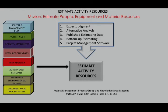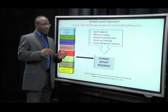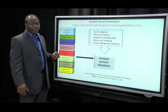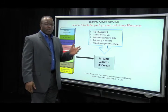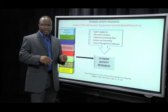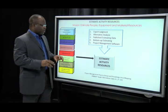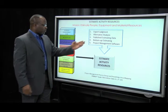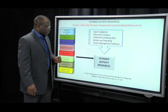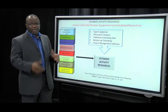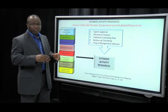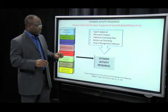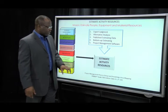We have bottom-up estimating, which enables us to break down a task into lower levels to better understand the task and better estimate the activity resources. If you've got a very difficult-to-understand task, break it down into lower levels, then add up how many resources you need and roll that up into a total — that's bottom-up estimating. Project management software like Excel, spreadsheets, and Microsoft Project can also be used to estimate activity resources.